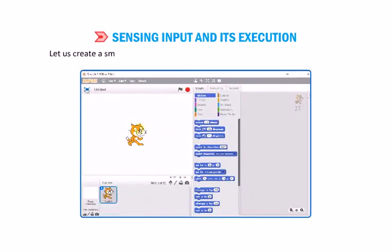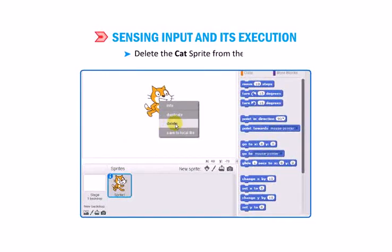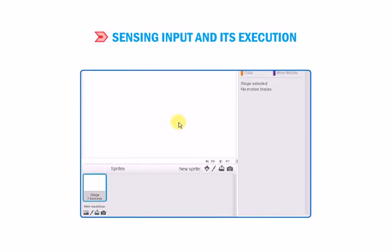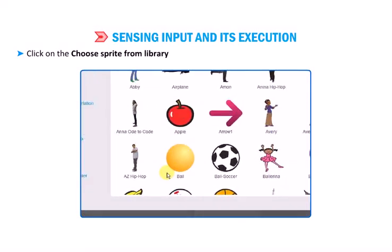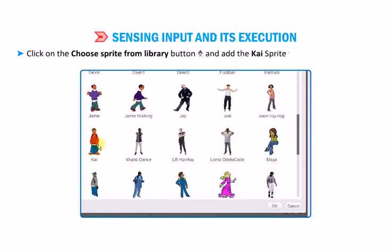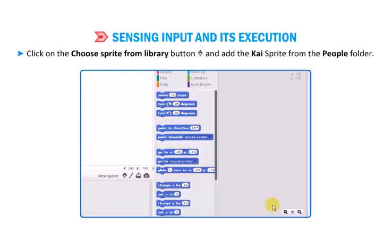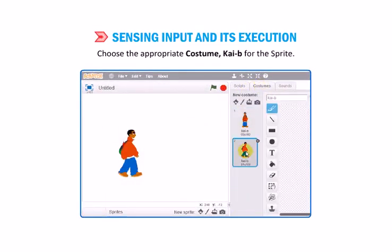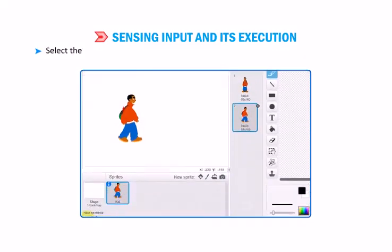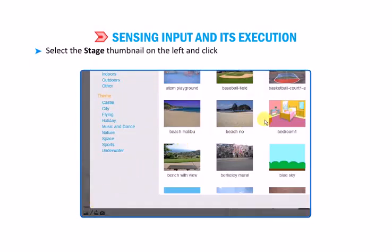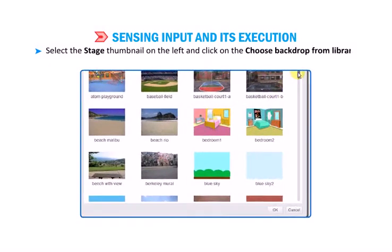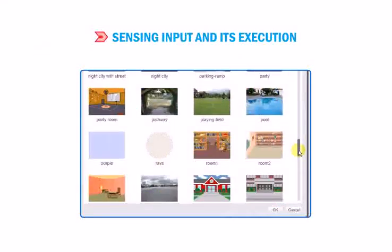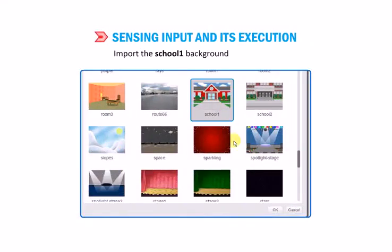Let us create a small block stack by using the sensing instructions and execute it. Delete the CAT sprite from the stage. Click on the choose sprite from library button and add the CHI sprite from the people folder. Choose the appropriate costume CHI B for the sprite. Select the stage thumbnail on the left and click on the choose backdrop from library button. Import the School 1 background on the stage.